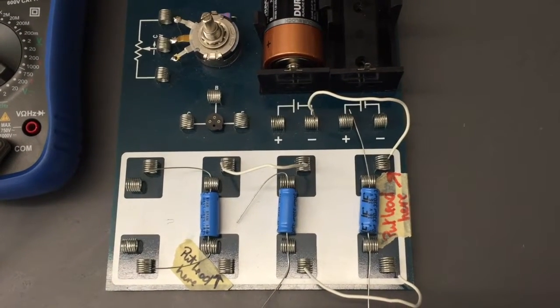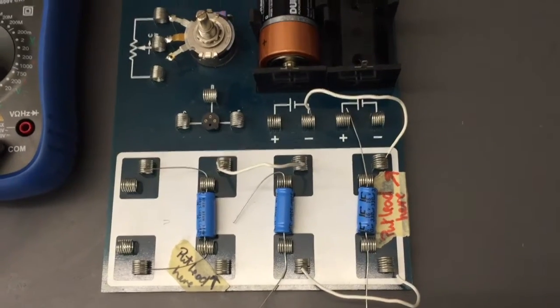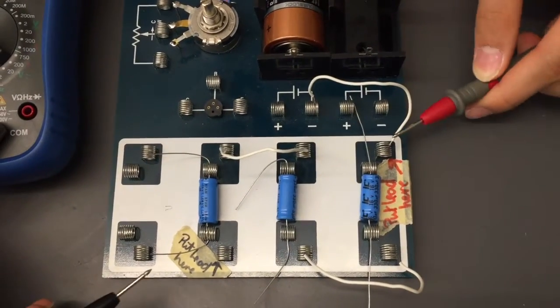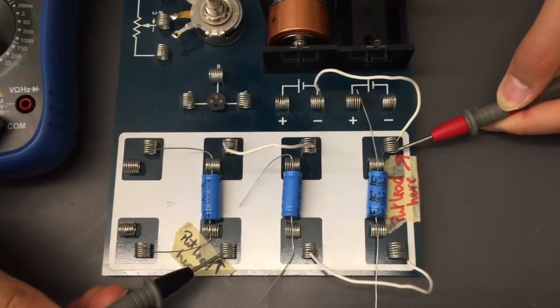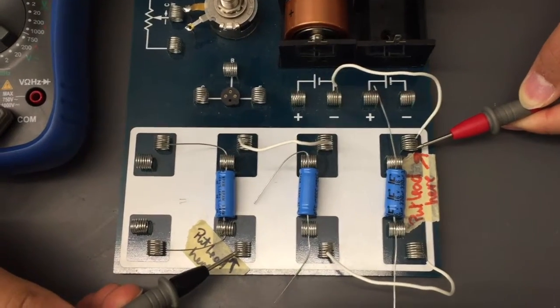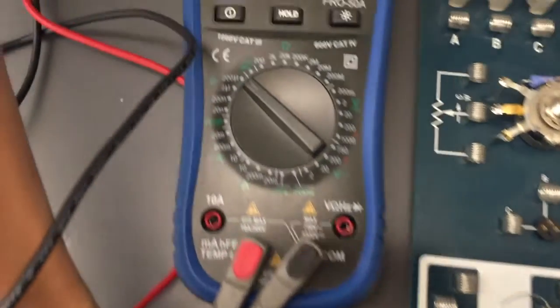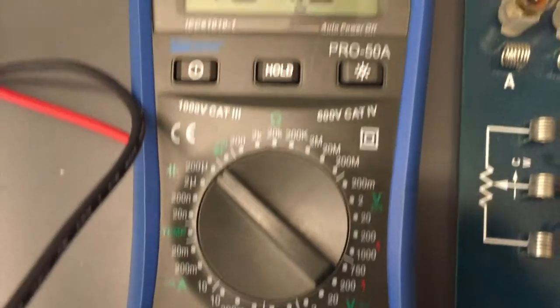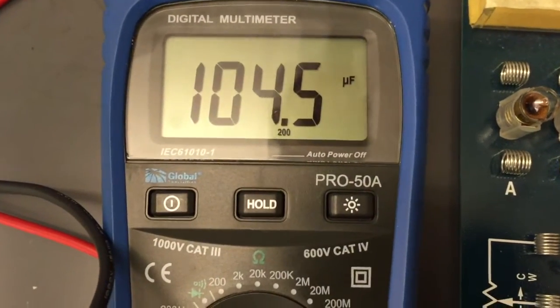Here, we have three 330 microfarad capacitors in series. Please take a moment to calculate the total capacitance. This will not be exact. As you can see, we have it set to microfarads, and we have received 104.5.